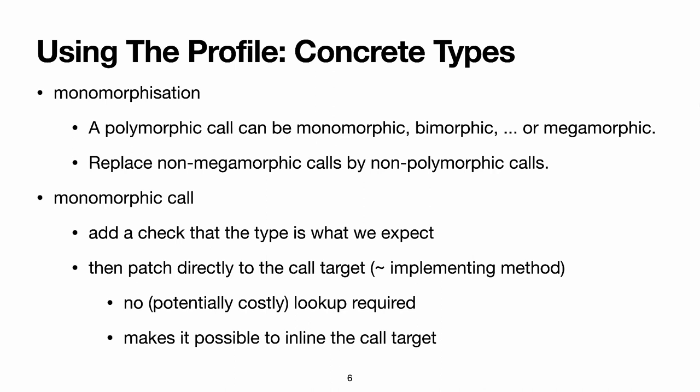Let's take the case of monomorphic calls. First, we add a check that the concrete type is indeed the type that we've always seen so far. Sometimes, this is not necessary because we know there is only one implementation and that new implementations cannot be added later. Note that this is not the case in Java, where you can dynamically load new classes at runtime. Then, we can call the call target directly, the implementing method in the Java example. We gain two things by doing this. First, we do not need to perform a potentially expensive lookup, and second, because we know the exact code that is called, we can potentially inline it.